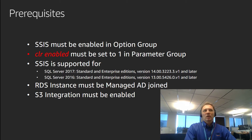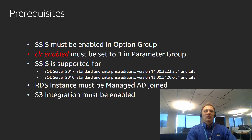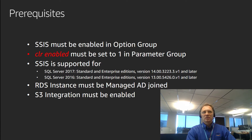The second prerequisite: the CLR enabled flag has to be flipped to one in the parameter group. Let's not get confused here — CLR generally speaking has very limited support on RDS. On 2017, it's not supported altogether. On 2016, you can only execute safe CLR. So this flag doesn't change anything about those limitations; it's just a hard requirement for you to be able to execute SSIS on the RDS instance itself.